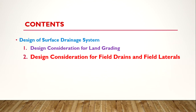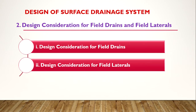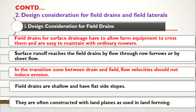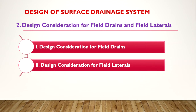In this lecture, we have already discussed that the design of a surface drainage system consists of two components. The first component is design consideration for land grading, which we have already discussed. The second component is design consideration for field drains and field laterals. After grading the land, we construct the ditches or drains. We are now moving on to the second step: construction of field drains and laterals.